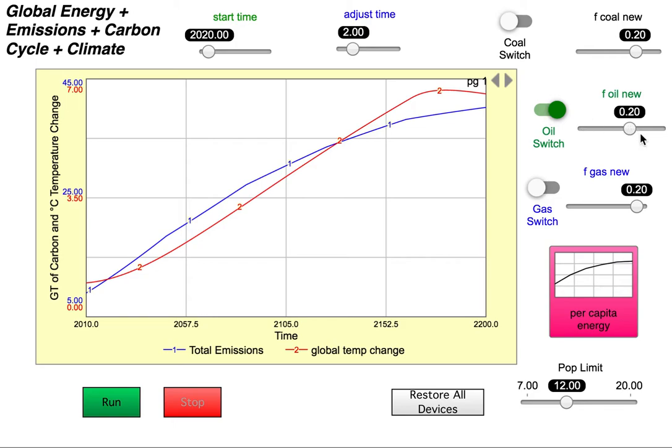Now we're going to turn the oil switch on. We're going to turn F oil new to zero. That means oil after the adjustment will represent zero of our energy. So that completely eliminates it.